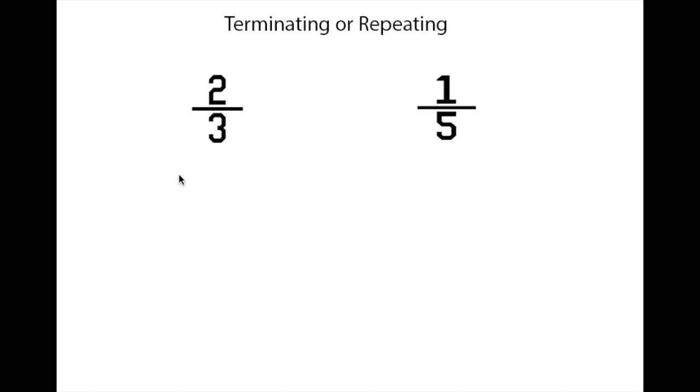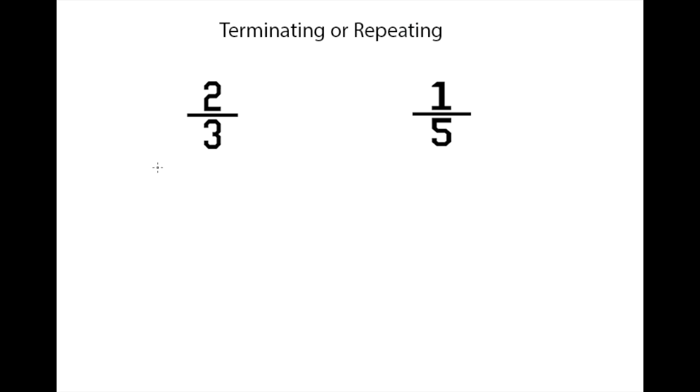So in order to determine whether or not a fraction is going to give us a terminating or repeating decimal, we are going to want to use long division. How we are going to do this is by taking our bottom number or our denominator. This is going to be our divisor, so we want to make sure that this is on the outside of our brackets when we are doing our division.